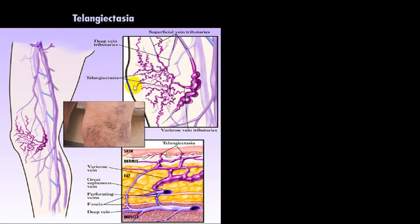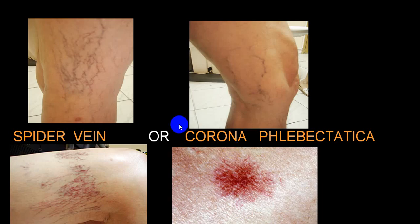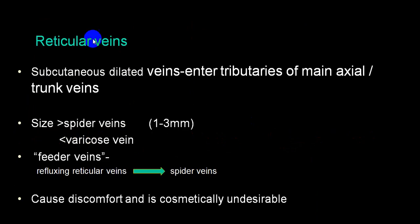Telangiectasia — also called spider veins or corona phlebectetica — appears as a mesh of tiny dilated intradermal vessels. Reticular veins are subcutaneous dilated veins entering as tributaries to the main axial trunk. Spider veins are between one to three millimeters in size, smaller than varicose veins. Feeder veins are where reflux occurs from reticular vein into spider veins, causing discomfort and cosmetic concern.